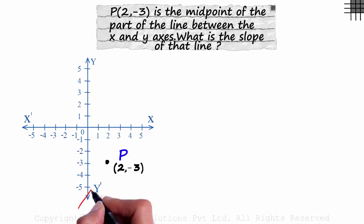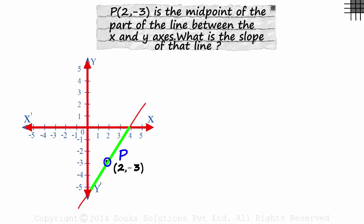One line we can draw is like this. It passes through the first, third and the fourth quadrant. So maybe the question is talking about P being the midpoint of this segment. It is formed between the x and the y axis. Is there any other way in which a line can be drawn through P?